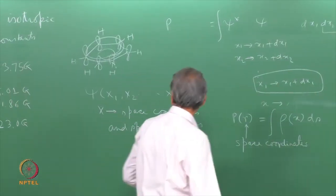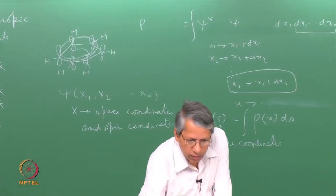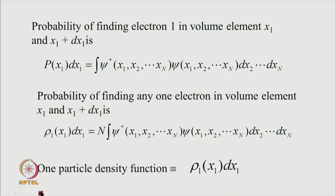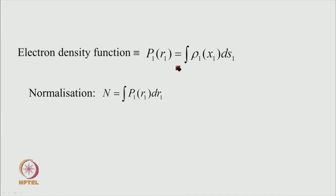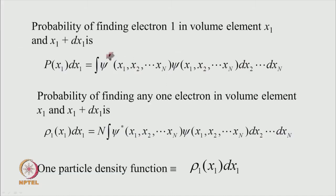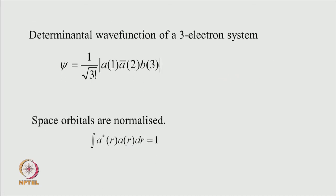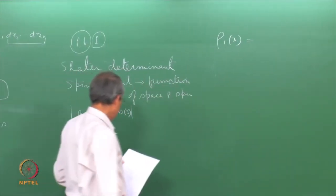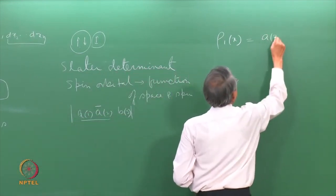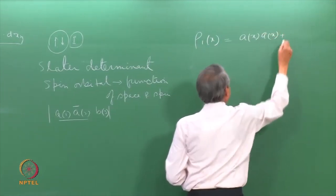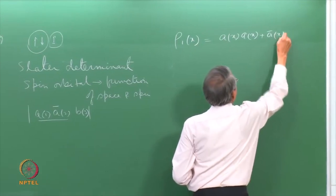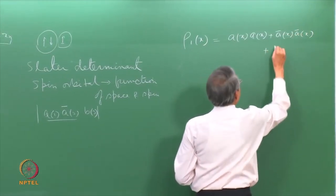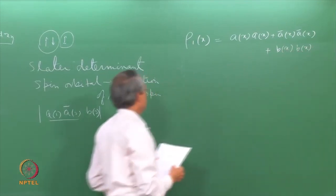If we expand this determinant we get the full form of the wave function. We also use space orbitals a and b, which are orthogonal and normalized to 1. Because the same space part is used for electrons 1 and 2, those electrons are paired, and only 1 electron is unpaired — occupying spin orbital b, which is space orbital b with an alpha spin function. We can then calculate the one-particle density function by forming psi-star times psi and integrating with respect to the other 2 electrons. The result turns out to be |a(x)|^2 + |a(x)|^2 + |b(x)|^2.